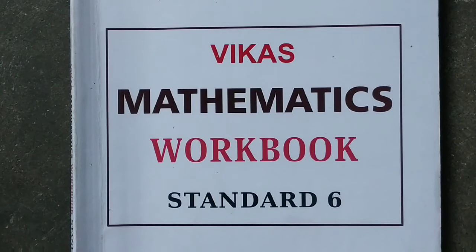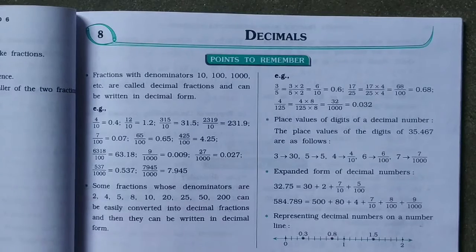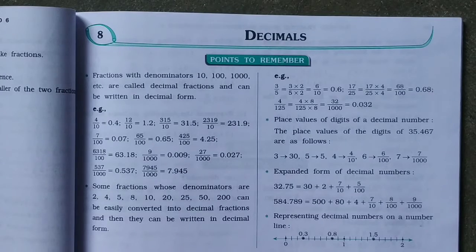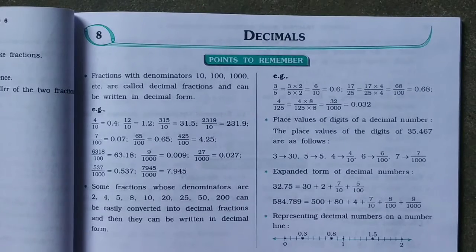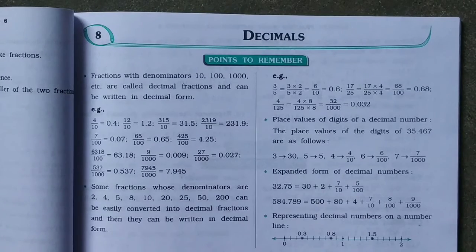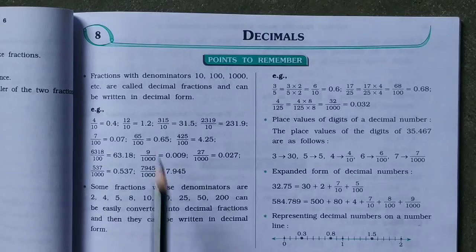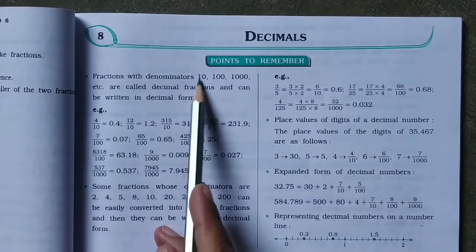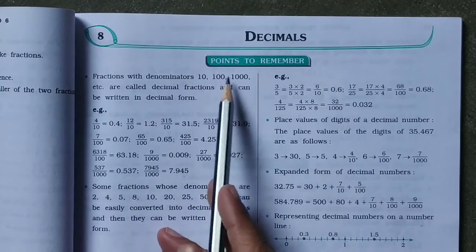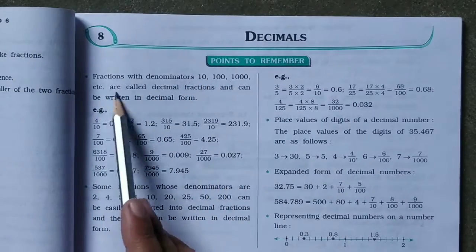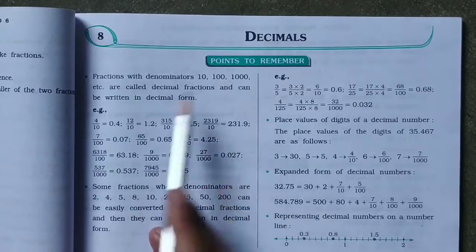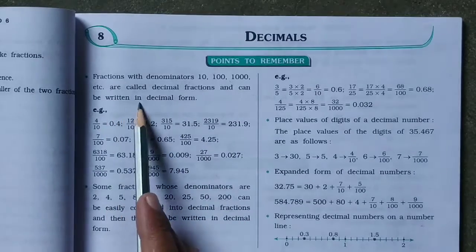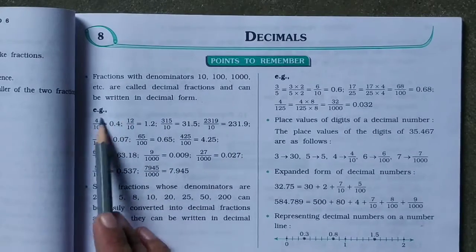Good morning everyone. Standard 6 Mathematics, Chapter 8: Decimals. The first main point of this chapter: fractions which have denominators 10, 100, 1000, etc. are called decimal fractions and can be written in decimal form.